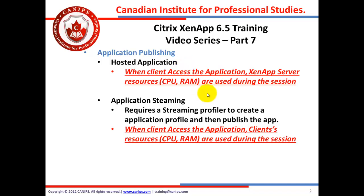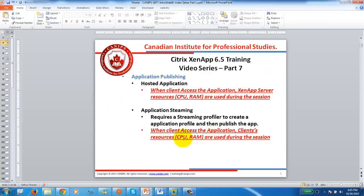The two major types are hosted application and streamed application, also called application streaming. Both are applications published on the XenApp server and accessed by clients. The key difference is: with hosted applications, the CPU and RAM of the XenApp server are used while the client accesses the application, whereas with streaming, the CPU and RAM of the client are used.